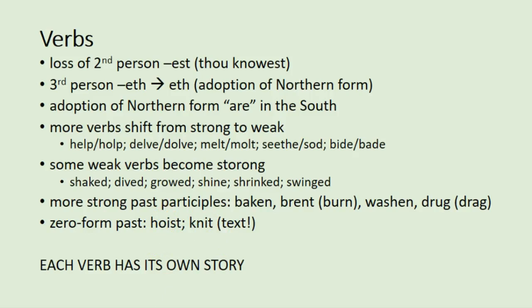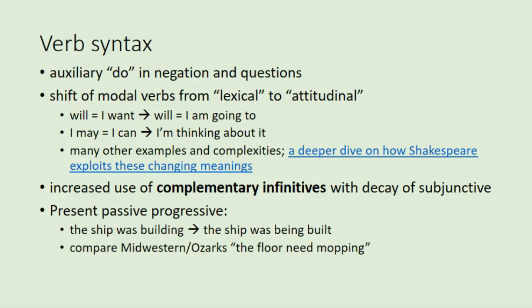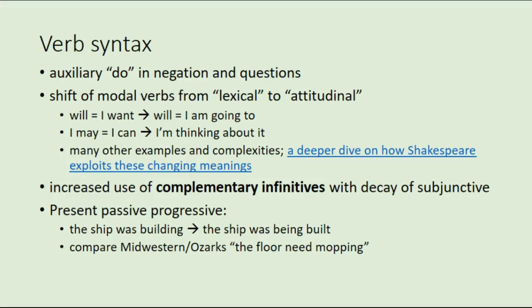Another change is how verbs get used in sentences. We see the emergence on a much wider scale of the auxiliary do in negation and questions. We don't say 'had you lunch,' we say 'did you have lunch'; we say 'I did not have lunch' rather than 'I had lunch not.' Those old-fashioned forms are still how negatives are formed in most Germanic languages — German, Swedish, Dutch — but English uses this auxiliary do. John McWhorter argues this is the influence of Celtic grammar, specifically Welsh, on our language.